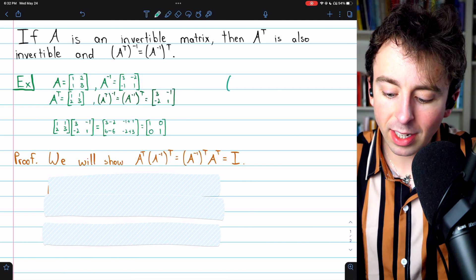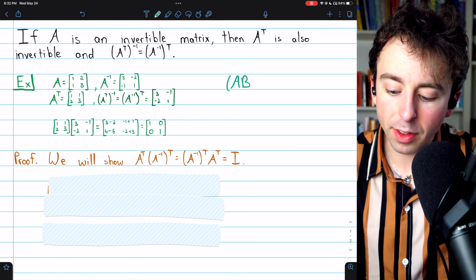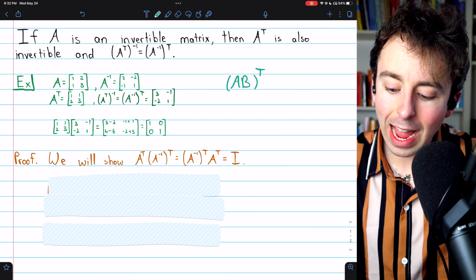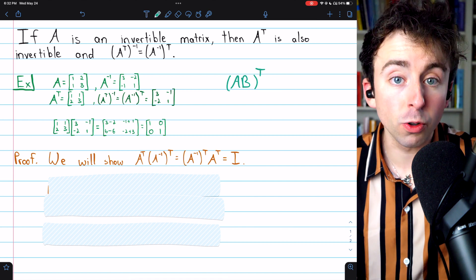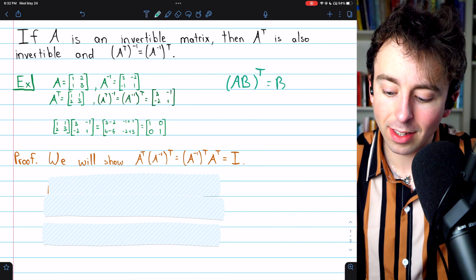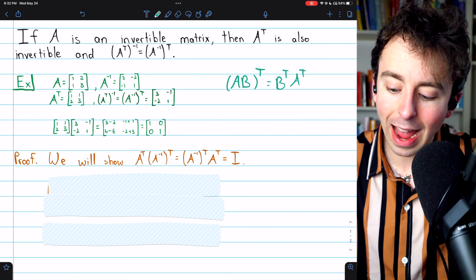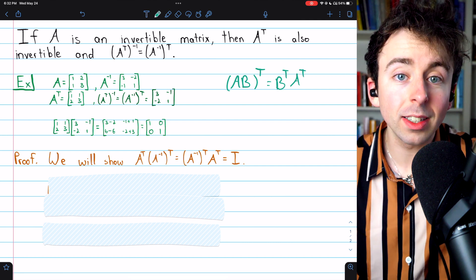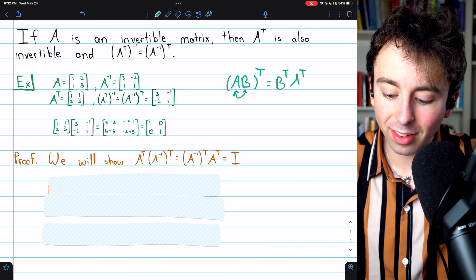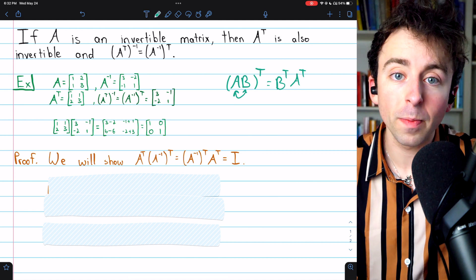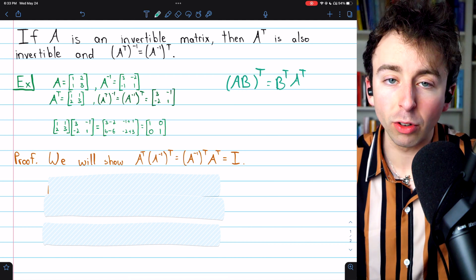To complete this proof, we're really just going to need one important property of the transpose, which is that AB transpose, the transpose of a product of matrices, is B transpose times A transpose, the product of the transposes, just in the reverse order. That's pretty much going to take us through this whole proof.